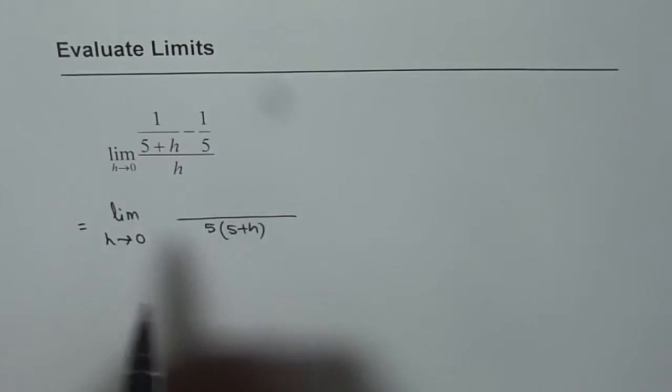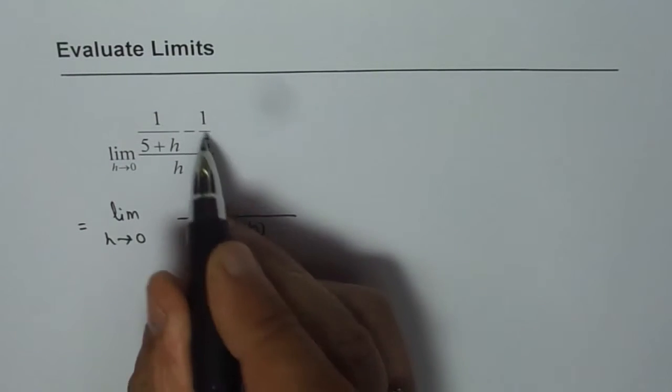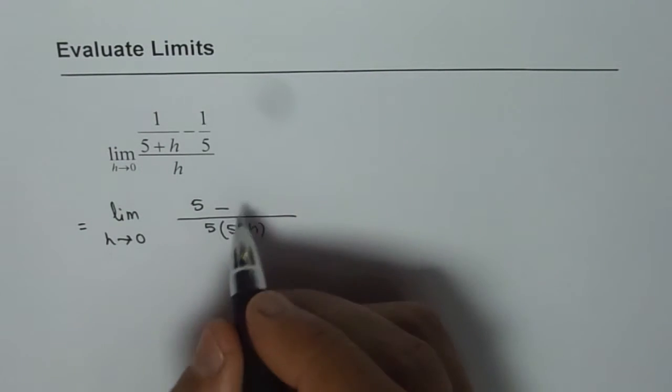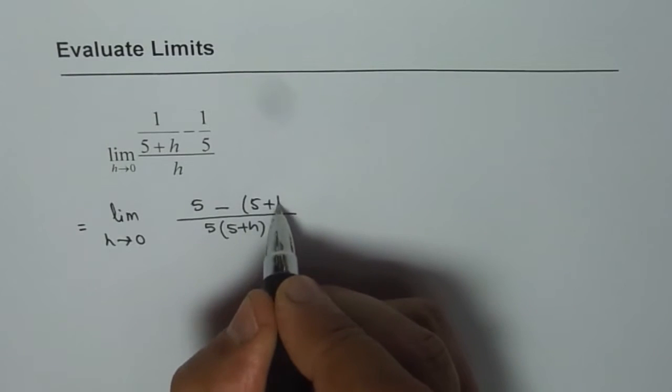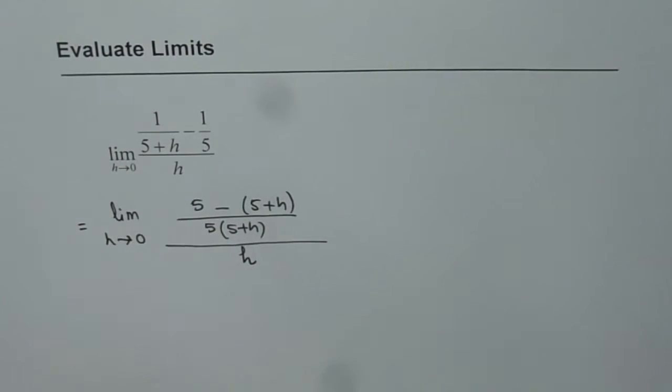Now to get this denominator, we have to multiply the first term by 5, so we get 5 minus, and the second term by 5+h. So we multiply by (5+h). That is what we get in the numerator, and the denominator is over h.